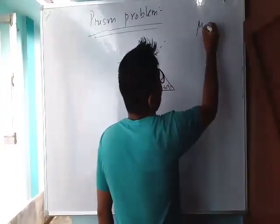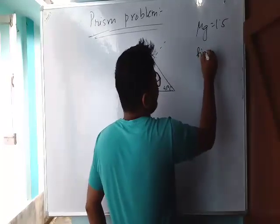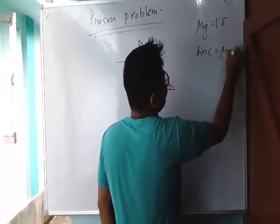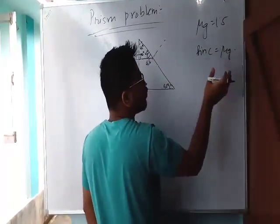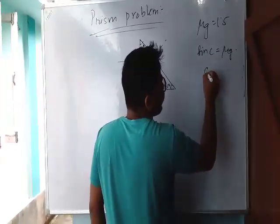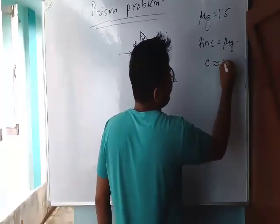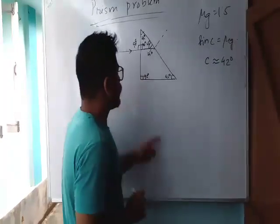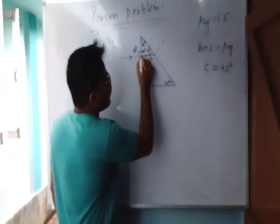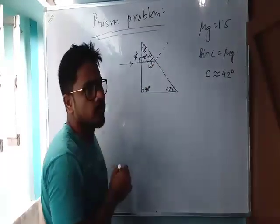The glass volume refractive index is 1.5. If you use this formula, you can use the sine law. So, the critical angle of the glass is equal to approximately 42 degrees, and the representation of the glass pool gives 48 degrees.